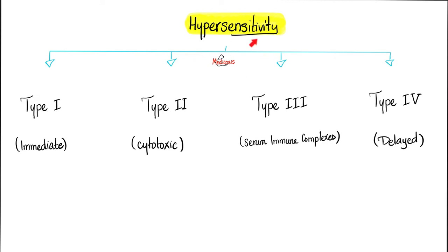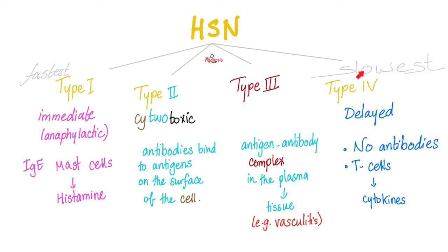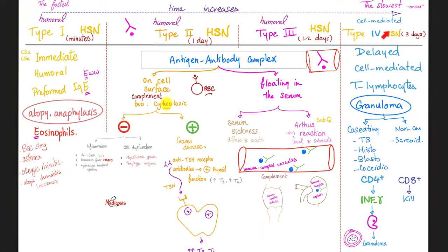Let's review hypersensitivity reactions — types 1, 2, 3, and 4, from the fastest to the slowest. Tuberculosis involves the slowest type: delayed type hypersensitivity. What kind of cells do we need? T-lymphocytes. Type 4 hypersensitivity — we're talking about a granuloma. After injecting the patient with the purified protein derivative, I should wait 2–3 days for the results, because that's how long it takes for the granuloma, the skin induration, to form.